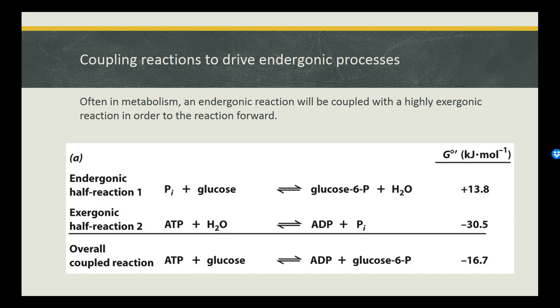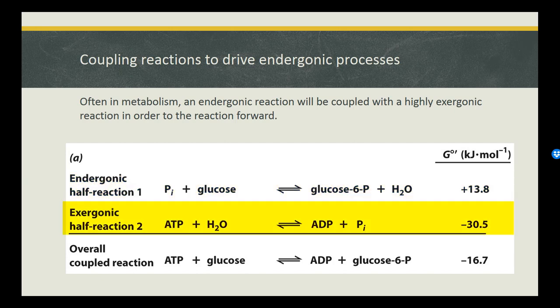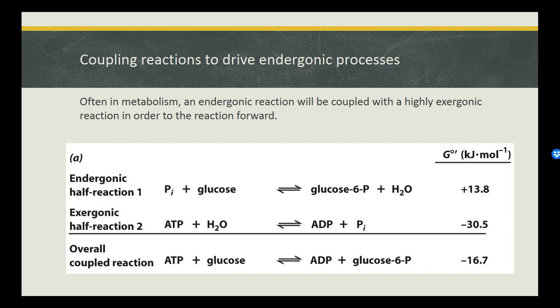Now that we know why the hydrolysis of ATP to ADP or AMP is so exergonic, let's look at how the cell harnesses that energy to do work. When we hydrolyze ATP in an enzymatically controlled way, we can couple that release of energy with another reaction that is endergonic. For example, the phosphorylation of glucose in the first step of glycolysis is endergonic and requires 13.8 kilojoules per mole. When coupled with the highly exergonic hydrolysis of ATP, which releases -30 kilojoules per mole, we get a net release of -16.7 kilojoules per mole — making what was a non-spontaneous, endergonic reaction both spontaneous and exergonic.